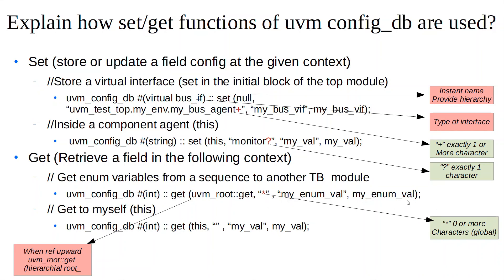For the second get example, if you want to do an assignment at your own level — for instance, at the agent level itself — since the agent is of type uvm_component, you use `this` as the context. Because you're pointing to a field name that exists at that same level, you don't need an instance name; you directly reference my_val, and my_val gets that config_db value. That covers the set and get questions — let me know if you have any other questions or comments. Thanks, see you in the next video!